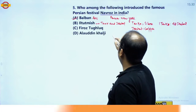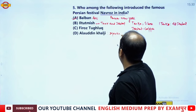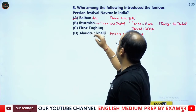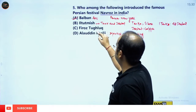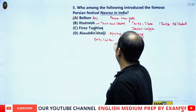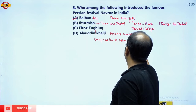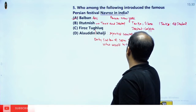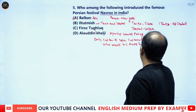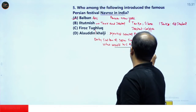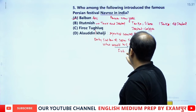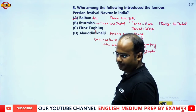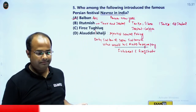Alauddin Khilji is famous for the market control policy. Feroz Shah Tughlaq is known as the Builder King of the Delhi Sultanate, and the only Sultan of the Delhi Sultanate who wrote his autobiography, titled Futuhat-i-Firoz Shahi. Therefore, the correct answer is option A, Balban.